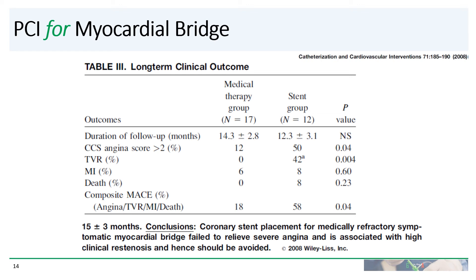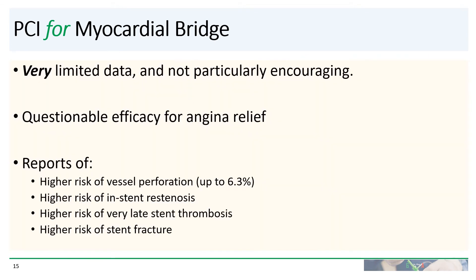There was also a very high rate of restenosis and a 42% rate of target vessel revascularization. The authors concluded that PCI for medically refractory symptomatic myocardial bridge should be avoided. There is very limited data for PCI for myocardial bridge, and what is available isn't particularly encouraging — questionable efficacy for angina relief, case reports and series of higher risk of vessel perforation up to 6.3% in one study, very high rate of in-stent restenosis, high risk of very late stent thrombosis, and higher risk of stent fracture.